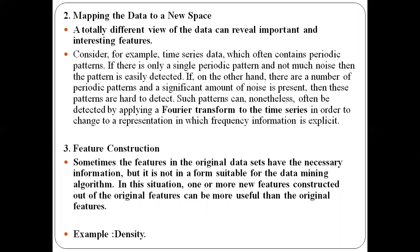Based on only volume and mass, we can't directly classify the artifacts by material type. So we construct a new feature — density — where density equals mass divided by volume. Based on the density of the material, we can now easily classify the artifacts. This demonstrates feature construction: creating a new feature from existing features mass and volume.